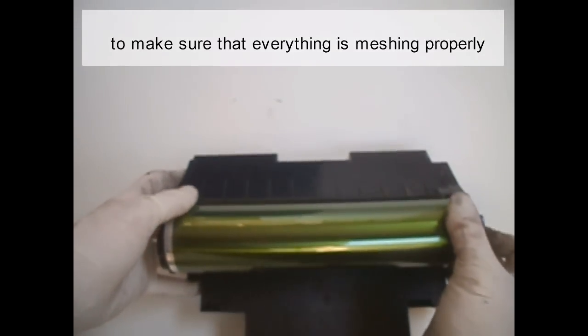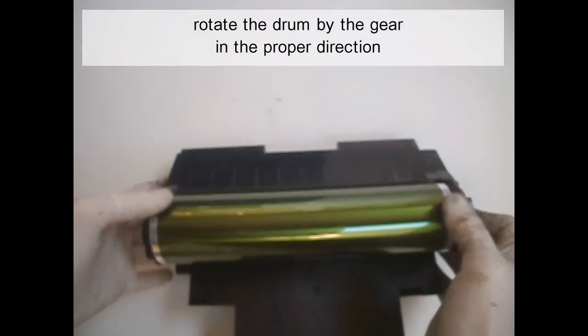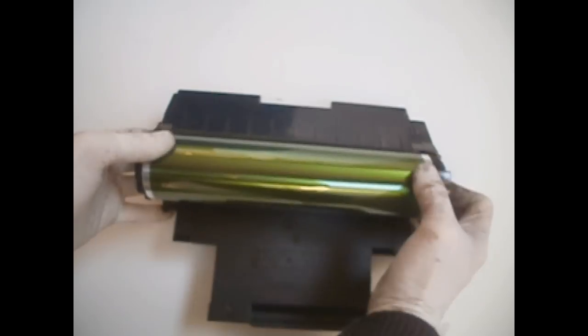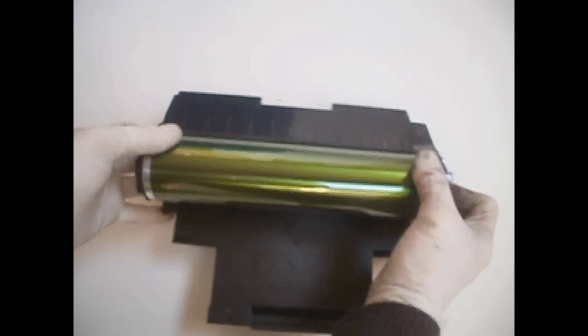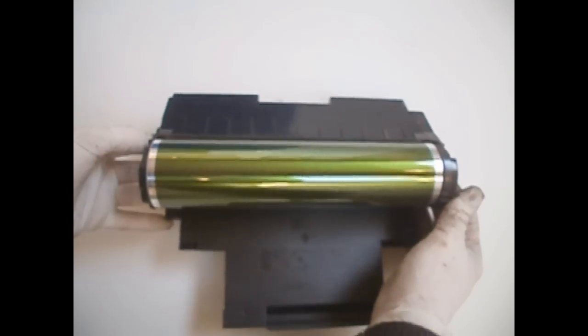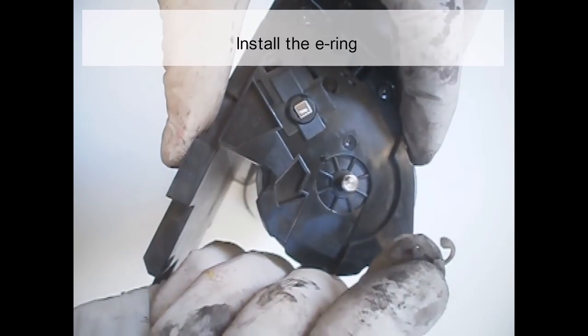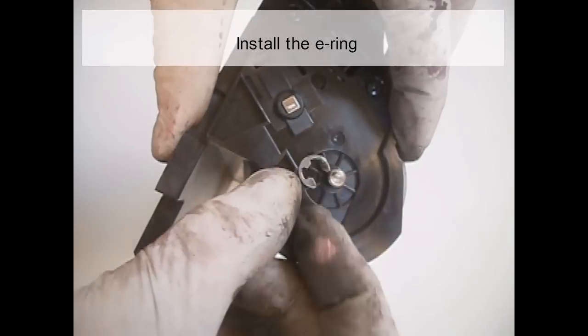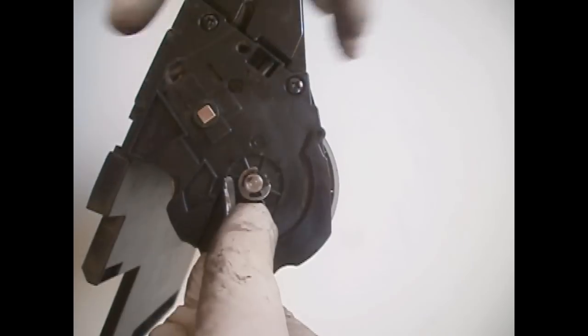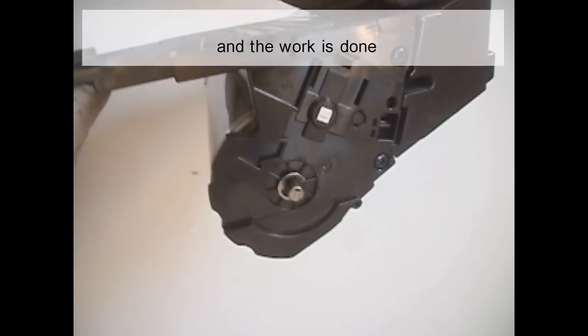To make sure that everything is meshing properly, rotate the drum by the gear in the proper direction. Install the e-ring, and the work is done.